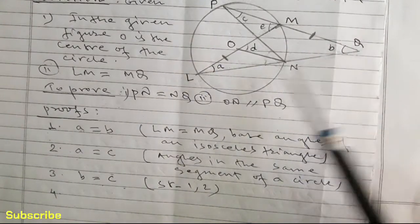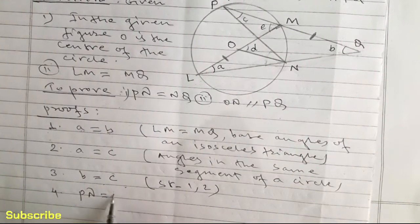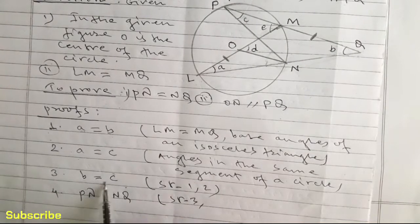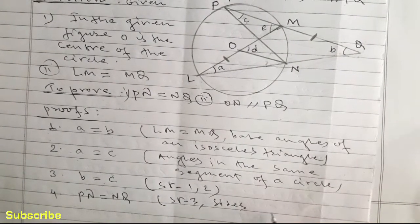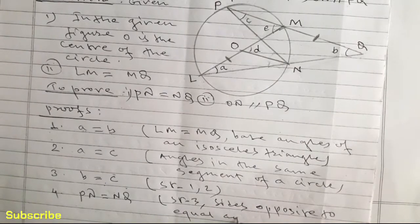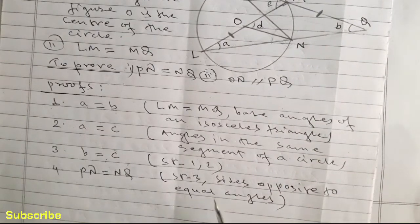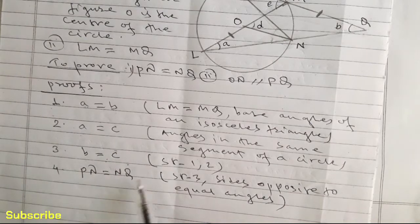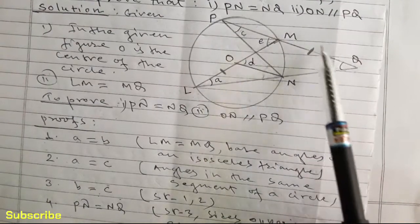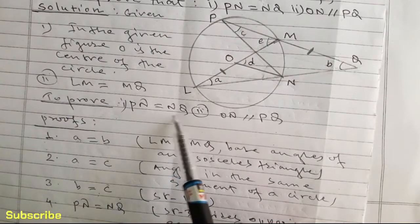So let's write down: PN is equal to NQ. We have got the first proof. The side PN is equal to NQ from statement number 3, because we have shown angle B is equal to angle C, and therefore the sides opposite to them are also equal.